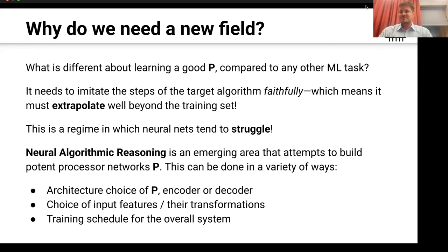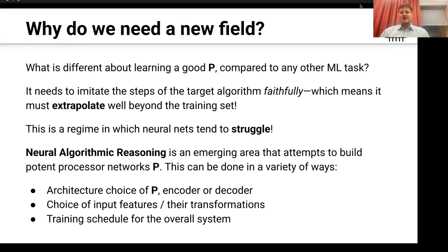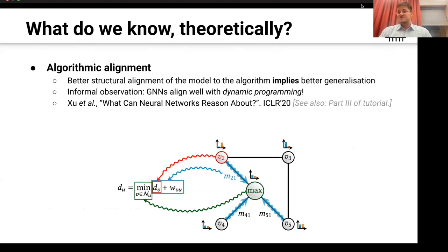Neural algorithmic reasoning is an emerging area that tries to build potent processor networks P. It does so by selecting specific architectural choices for P, encoders, and decoders that give better algorithmic generalization; by giving prescriptions on what to do with input data and transformations; and by providing advice on how to train the overall system. There are many inductive biases and changes to the training regime that neural algorithmic reasoning can recommend to make network P easier to build. Now, let me give an outline of the related work so you have a good collection of references to navigate this area.